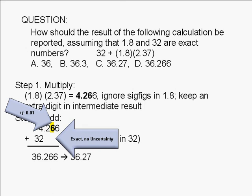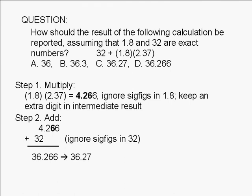Therefore, the magnitude of the uncertainty in the answer is at least plus or minus 0.01. The answer must be reported to the second decimal place. The correct answer is 36.27.